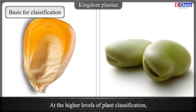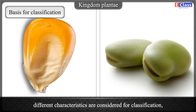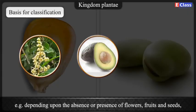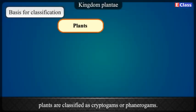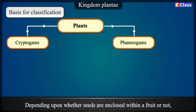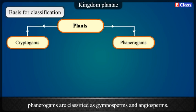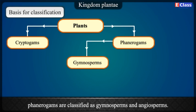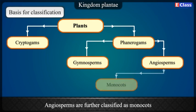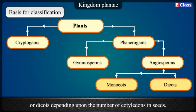At the higher levels of plant classification, different characteristics are considered. Depending upon the absence or presence of flowers, fruits, and seeds, plants are classified as cryptogams or phanerogams. Depending upon whether seeds are enclosed within a fruit or not, phanerogams are classified as gymnosperms and angiosperms. Angiosperms are further classified as monocots or dicots depending upon the number of cotyledons in the seeds.